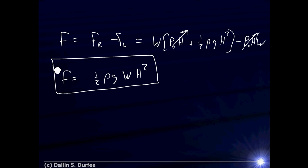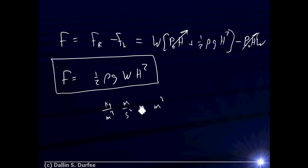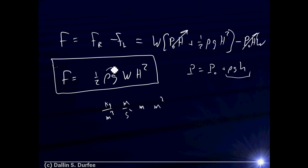So there's our answer. Before plugging in numbers, let's check the units. A faster way: since we know P equals p-naught plus rho·g·h is correct, rho·g times a length has units of pressure. So rho·g·H is a pressure, and W·H is an area. Pressure times area gives force — so yes, the units work out.